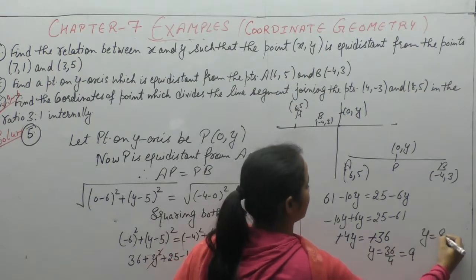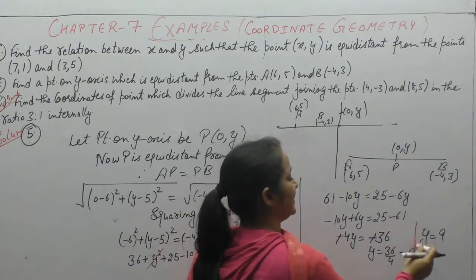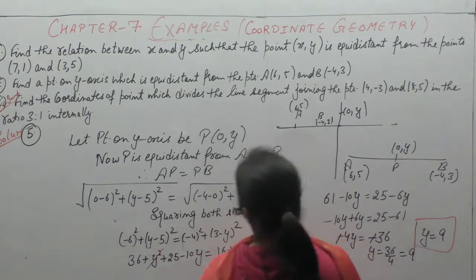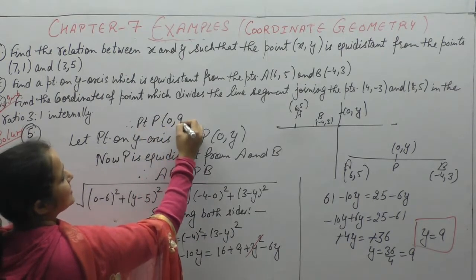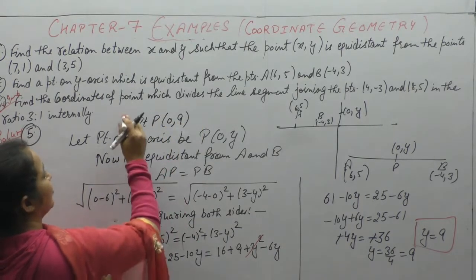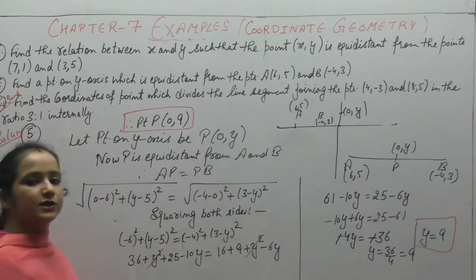y value is 9. Therefore, point P is (0,9). The point on y-axis is (0,9).